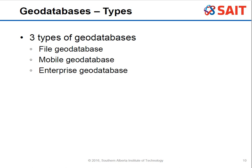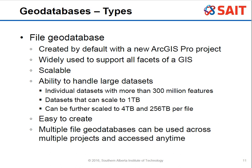There are three geodatabase types functional with ArcGIS Pro: the file geodatabase, the mobile geodatabase, and the enterprise geodatabase. The file geodatabase is the default — it's supported across all kinds of GIS systems and is scalable with unlimited data size. It can hold more than 300 million features within a dataset, datasets can scale to one terabyte, and can be further scaled to four or even 256 terabytes per file.